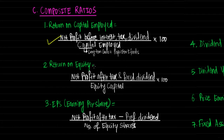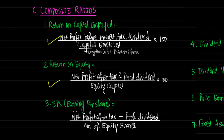Second is return on equity, calculated as net profit after tax less fixed dividend divided by equity capital into 100. Fixed dividend refers to preference dividend; this amount is divided by paid up equity share capital to get return on equity funds. Third ratio is earnings per share (EPS), calculated as net profit after tax minus preference dividend divided by number of equity shares — the numerator is the same but divided by number of equity shares to get EPS.